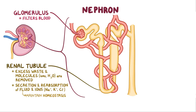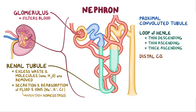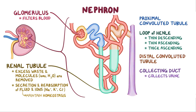The renal tubule has a few segments of its own: the proximal convoluted tubule, the U-shaped loop of Henle with a thin descending, a thin ascending, and a thick ascending limb, and finally the distal convoluted tubule, which empties into the collecting duct, which collects the urine.